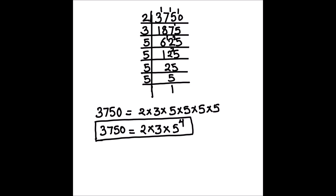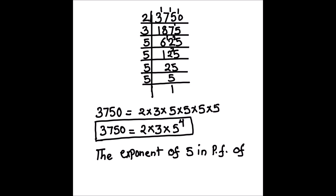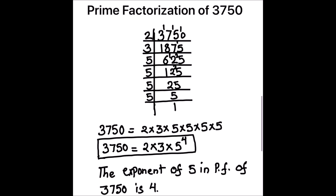There is one more question — we need to find the exponent of 5. As written in exponent form, the exponent of 5 in this factorization is 4. So the answer to the question: the exponent of 5 in the prime factorization of 3750 is 4. I hope this video is helpful. If you like the video, please hit the like button and subscribe to my channel for more math videos. Thanks for watching.